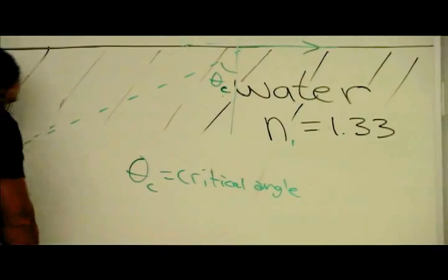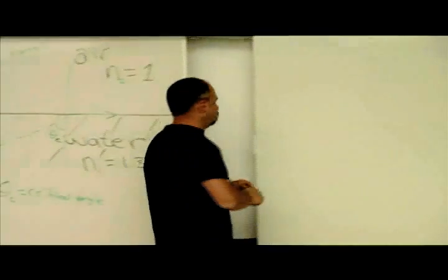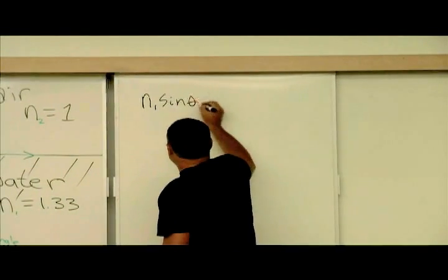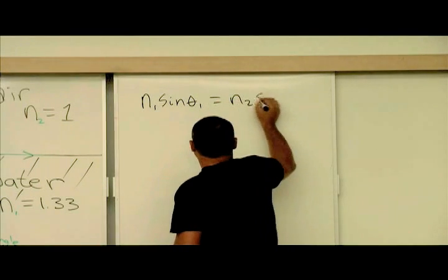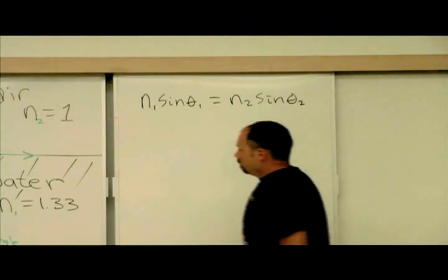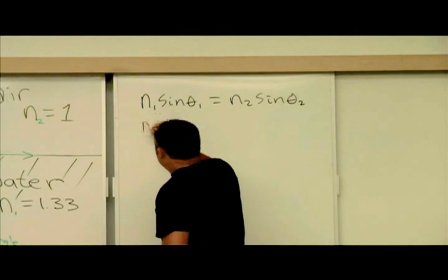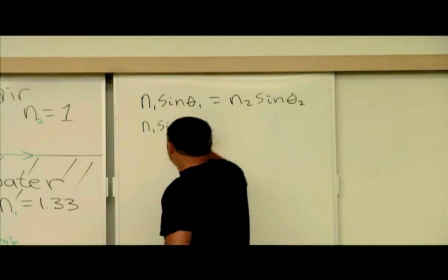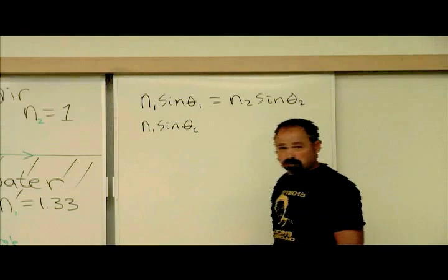Now, we can always find the critical angle using Snell's law. And we know Snell's law is N1 sine theta 1 equals N2 sine theta 2. So, for our case, water is the N1, and then that will be sine theta of the critical angle, which we're trying to find.